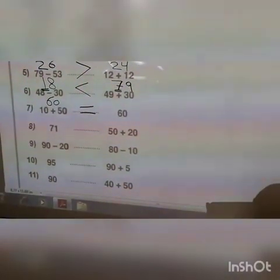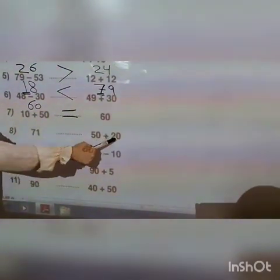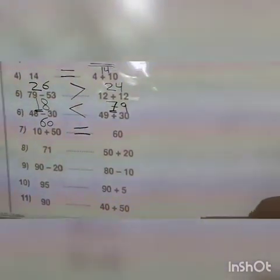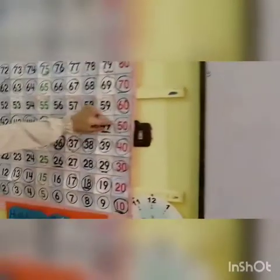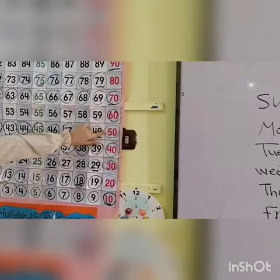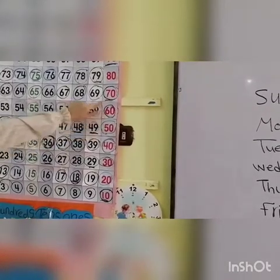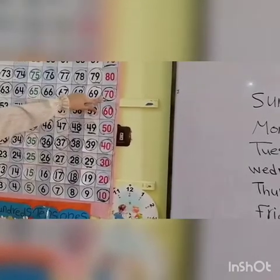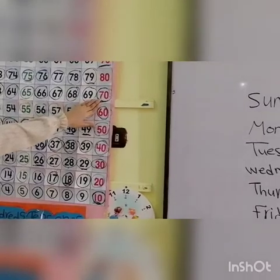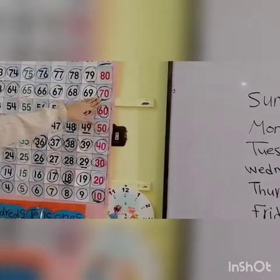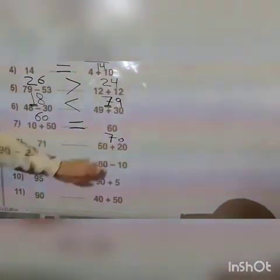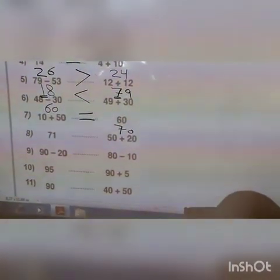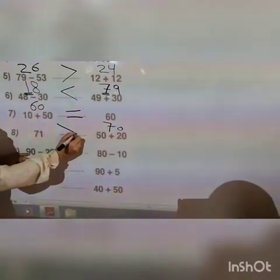Number eight: seventy-one and fifty plus twenty. Stand on fifty; plus twenty — two in the tens, go up two steps. Zero in the ones, so still standing on seventy. Here we have seventy-one and seventy — seventy-one is more than seventy.